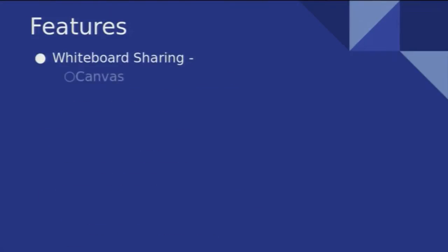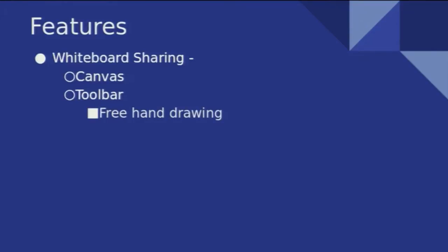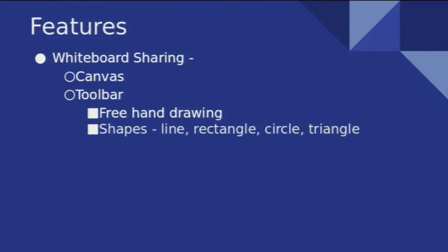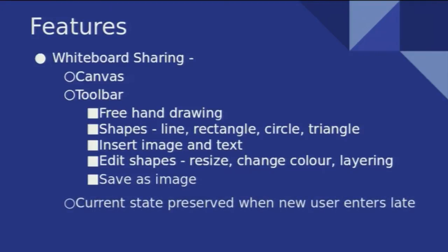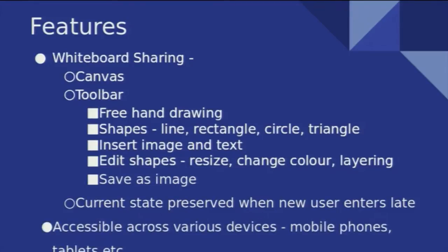We have whiteboard sharing using canvas. In the toolbar, the options are freehand drawing, shapes — line, rectangle, circle, triangle — and we can insert an image from a local file and add text. We can edit the shapes, resize them, change color, and change the layering. We can save the image on the client side as well as the server side as a PNG file. If a conference is going on and a user joins late, the current state of the canvas will be transmitted to him and he can continue with the conference. Our application is accessible across various devices like mobile phones, tablets, and PCs.